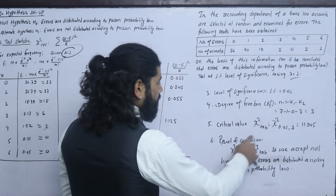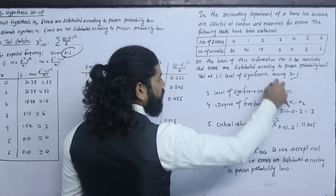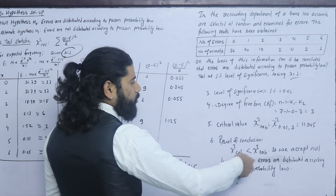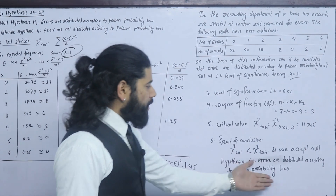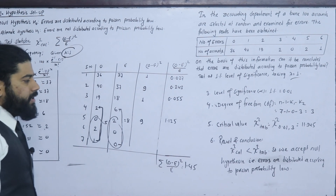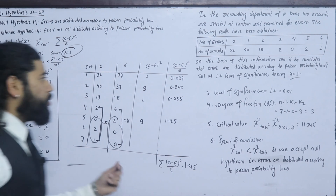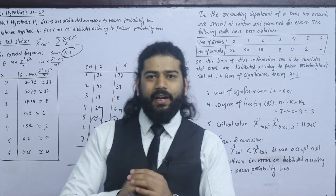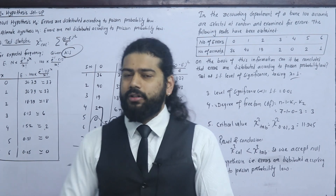Result and conclusion: since the calculated chi-square value of 1.45 is less than the critical tabulated value, we accept the null hypothesis. Errors are distributed according to the Poisson probability law.